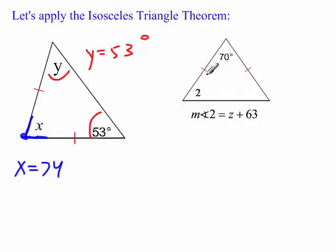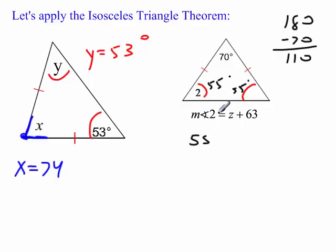Now this problem here, we have marks here and here. So these two legs are congruent, which means that these two base angles are congruent. Well, if this is 70 degrees, if we take 180, subtract the 70, we get 110 degrees. And you divide that by two because these two angles are congruent, the base angles, which means that both of these are 55 degrees. So then you can substitute 55 in for the measure of angle 2, set it equal to z plus 63, and you subtract the 63 from both sides. So z has to be negative 8.